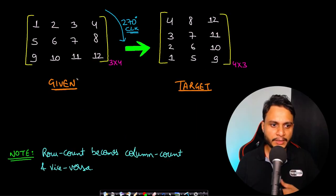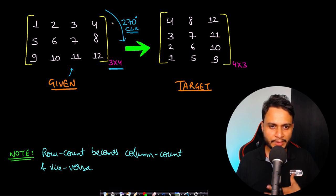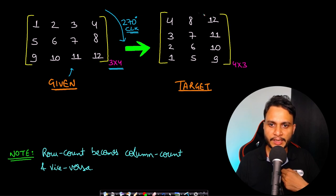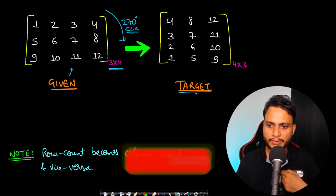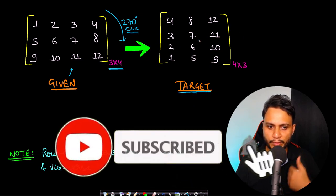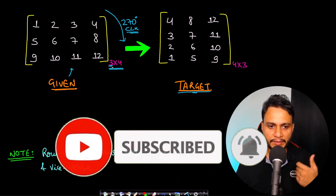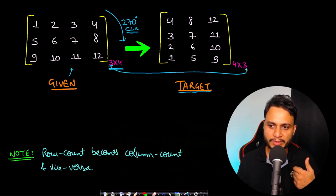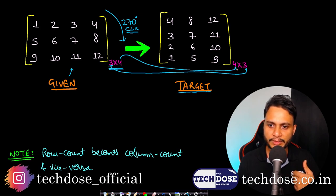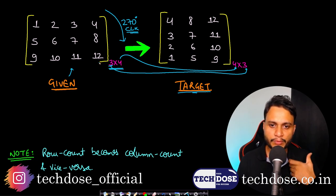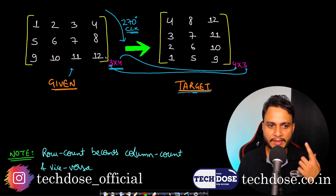Let us now look at the problem statement. We are given an M by N matrix and we are required to rotate the matrix by 270 degrees in the clockwise direction to achieve the target matrix. You will note that the row count on the given matrix becomes the column count on the target matrix, and the column count becomes the row count. This should work for rectangular matrices as well as square matrices.